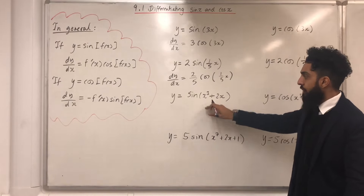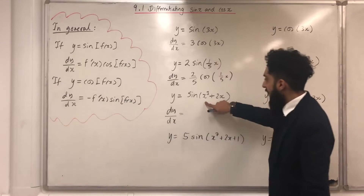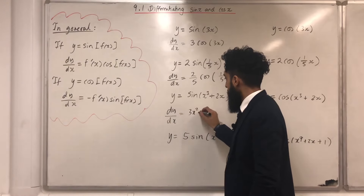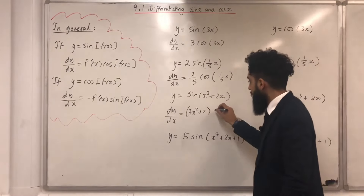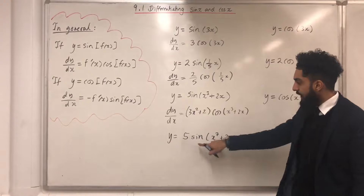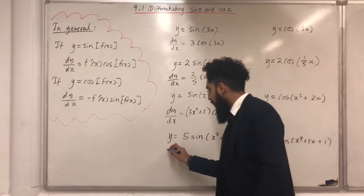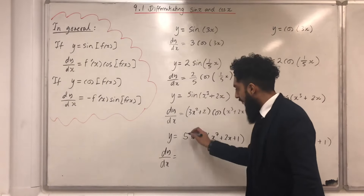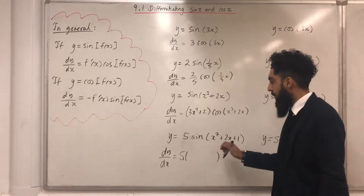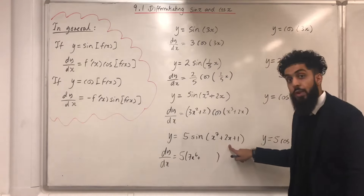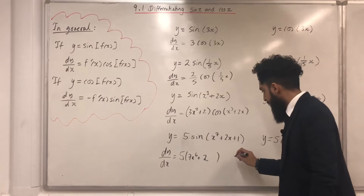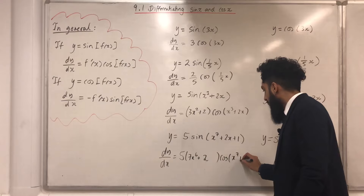For y equals Sine of x cubed plus 2x: differentiating x cubed plus 2x gives 3x squared plus 2, so dy/dx equals 3x squared plus 2, multiplied by Cos of x cubed plus 2x. For y equals 5 Sine of x to the power 7 plus 2x plus 1: differentiating the polynomial gives 7x to the power 6 plus 2, so dy/dx equals 5 times 7x to the power 6 plus 2, multiplied by Cos of x to the power 7 plus 2x plus 1.